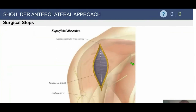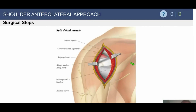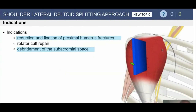For the anterolateral surgical steps, we perform superficial dissection followed by deeper dissection, identifying the axillary nerve. We can expose the long head of the biceps, and if performing a biceps tenodesis, that can be done suprapectorally or subpectorally.